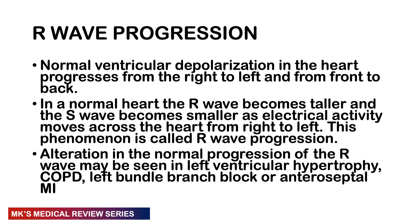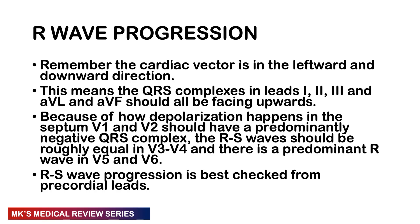Normal ventricular depolarization progresses from right to left and from front to back. In a normal heart, your R waves become taller and your S waves become smaller as electrical activity moves from the right to the left side. This phenomenon is what we refer to as R wave progression. Any abnormalities in R wave progression can indicate problems such as left ventricular hypertrophy, COPD, left bundle branch block, or anteroseptal MI. Our cardiac vector moves in a leftward and downward direction, so QRS complexes in leads where the vector moves towards should be positive — leads I, II, III, AVL, and AVF.